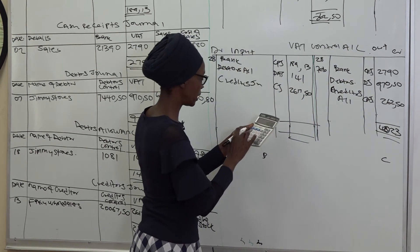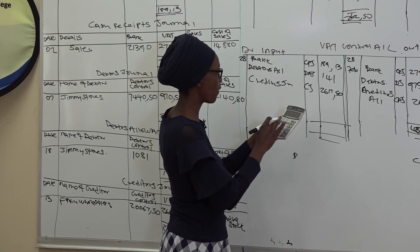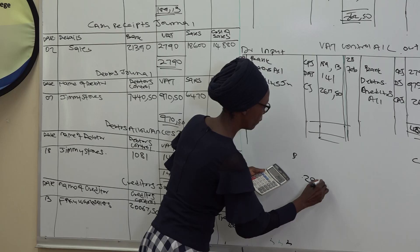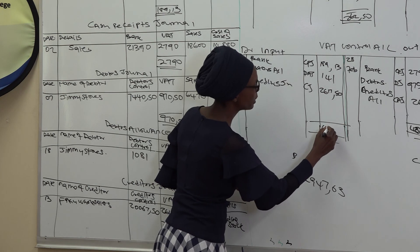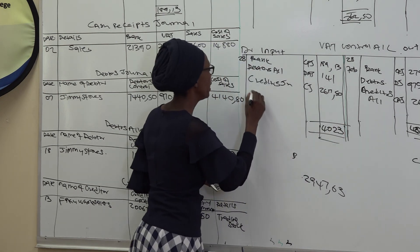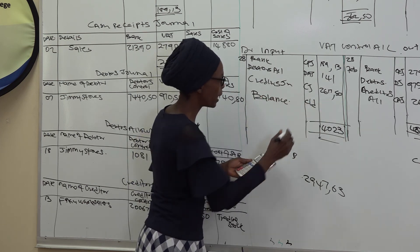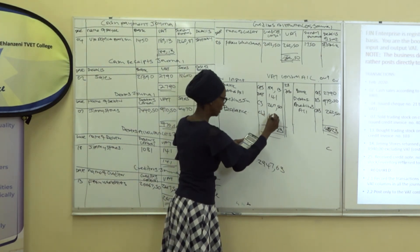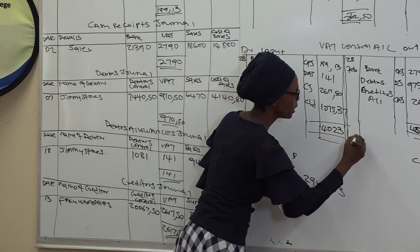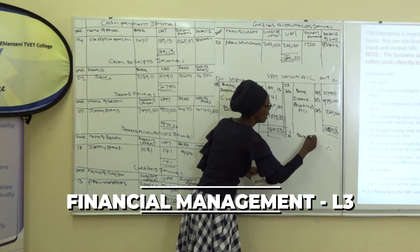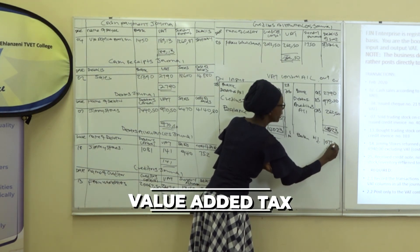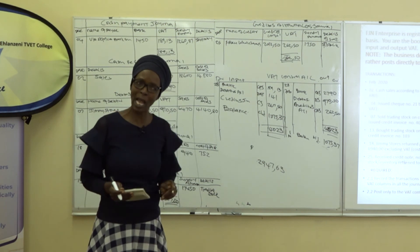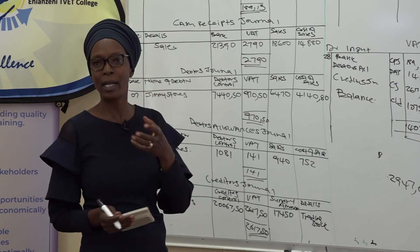The debit side is: 189.13 plus 141 plus 2,617.50 equals R2,947.63. That means the business has collected more VAT than it has paid. The balance carried down is on the credit side. Subtract: 4,023 minus 2,947.63 equals R1,075.37. This will be the balance brought down on 1 March. This R1,075.37 is payable to SARS because the business has collected more VAT than it paid.